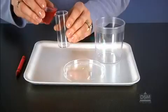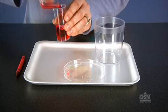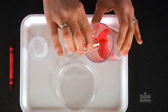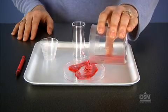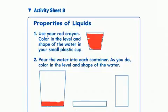Next, have the students pour the water from their small plastic cups into the other differently shaped containers on their trays. Each time students pour their water into a new container, they should also color in the level and shape of the water in the space provided in question 2 of their activity sheets.